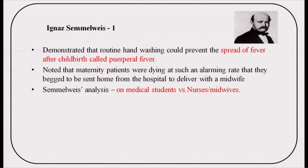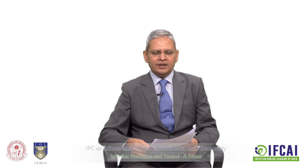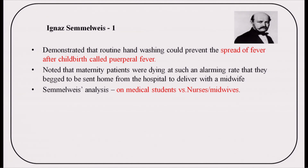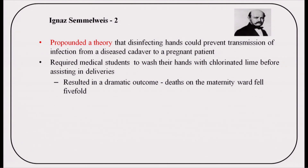This drastically improved rates of maternal mortality. As is common with pioneering ideas, his concept of hand washing as a preventive measure was initially ignored and ridiculed by colleagues. When Koch's postulates were published, the germ theory of disease and Semmelweis's theory of transmission from patient to patient were considered plausible. He propounded that disinfecting hands could prevent transmission of infection from a cadaver to a pregnant patient, and as a result, deaths on the maternity ward fell fivefold.